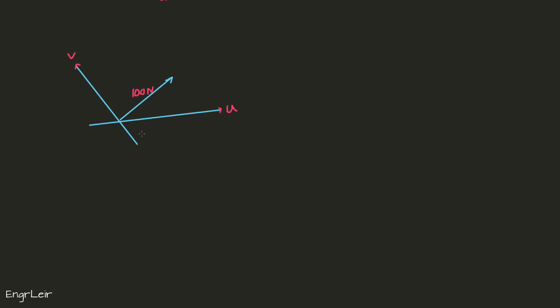For this one, my 100 Newton force is 20 degrees from u and about 80 degrees from v. So this angle here is 80 degrees—20 and 80 degrees. My axes are not perpendicular; 20 plus 80 is 100. The task is to find the components of this 100 Newton force in the u and the v direction.